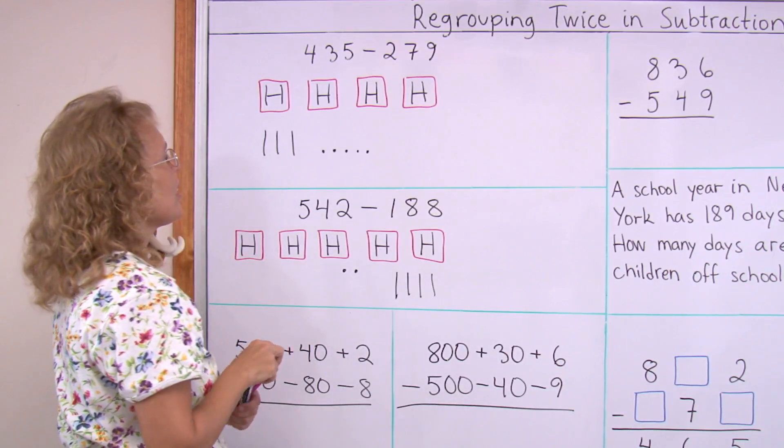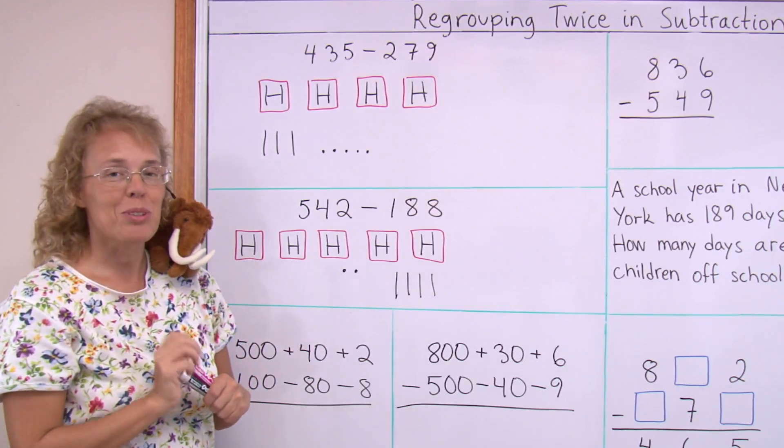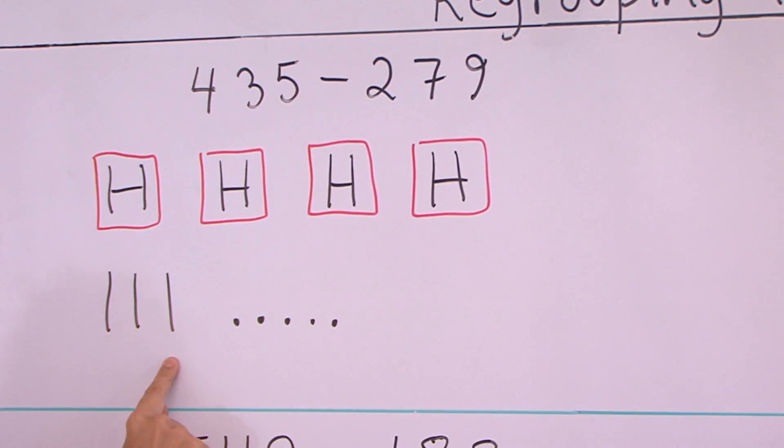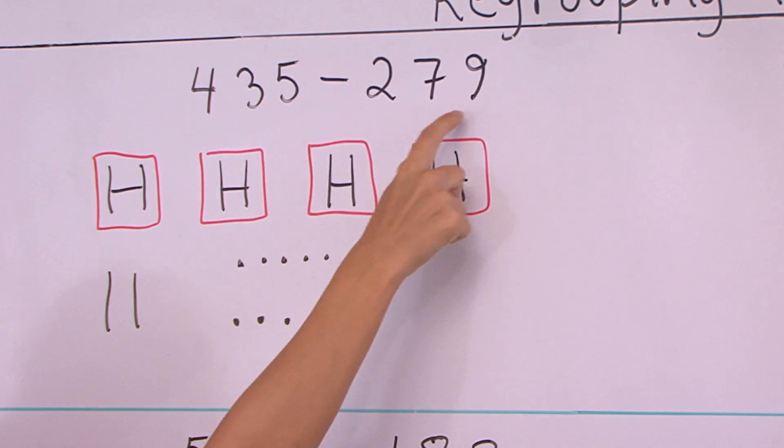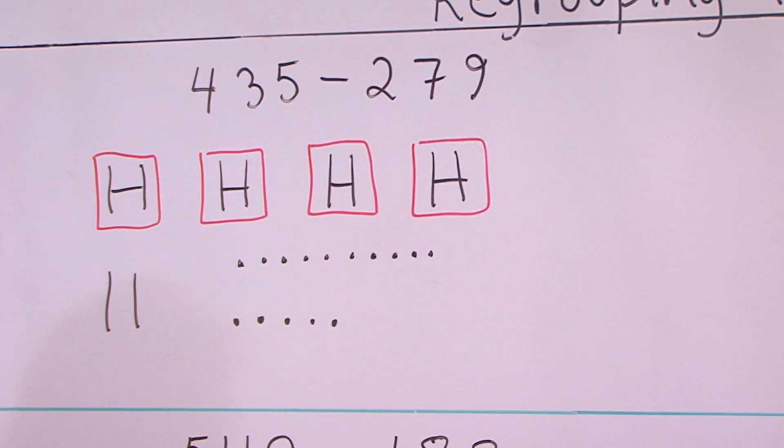So this is what we will do, we will regroup twice. We will take one of the tens and break it down into ten little ones. And now I could subtract those nine ones.